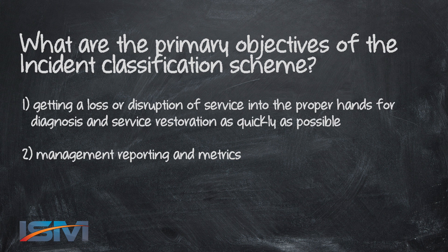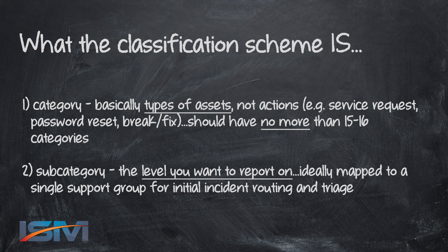The primary objective of the incident management process itself is restoration of service. So the primary objective for the incident classification scheme is getting that incident, that ticket, into the hands of those best positioned to restore service as quickly as possible. The second objective is management reporting and metrics — what you're going to use to measure yourselves and for continuous improvement, so that the IT organization is better serving the enterprise.